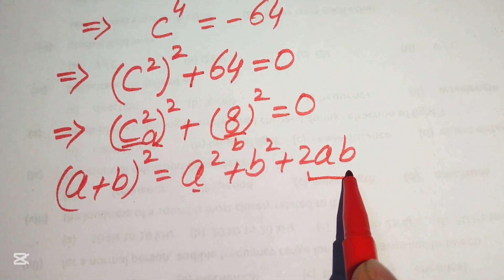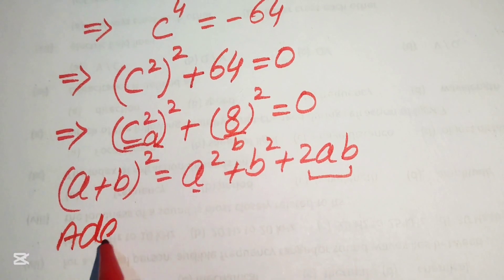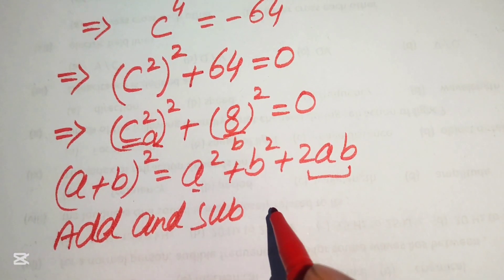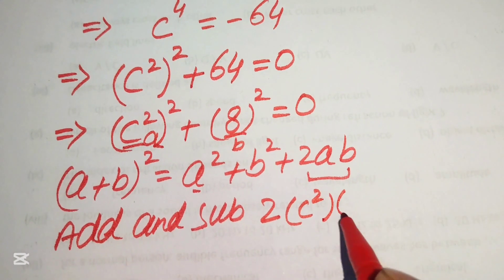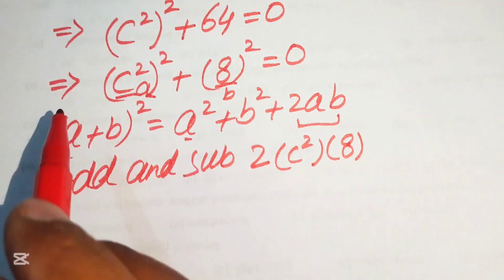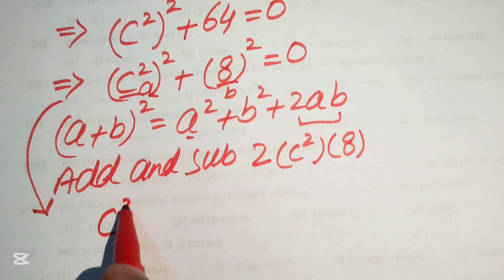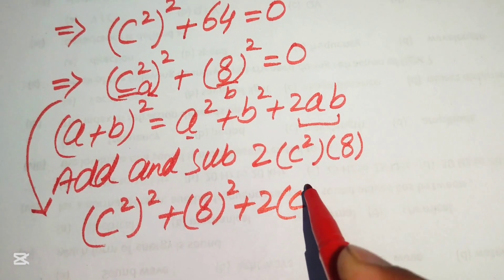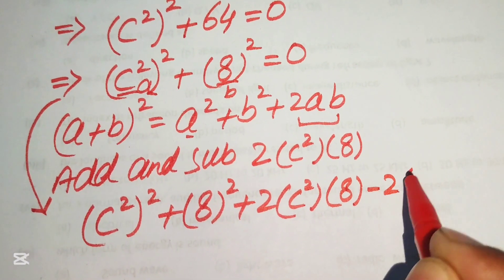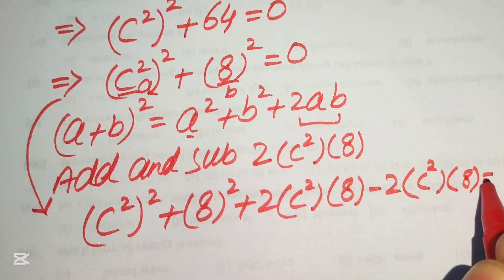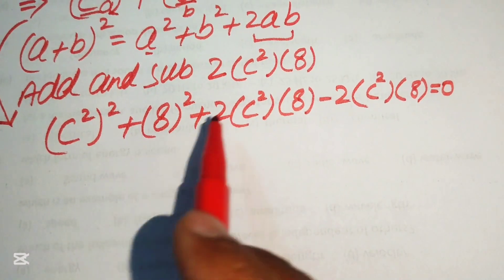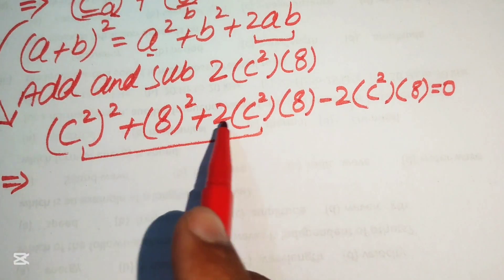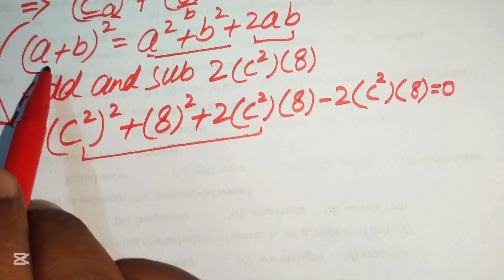To complete the square, we need the term 2 times a times b. So we add and subtract 2 times c squared times 8 to the equation. This gives us c squared whole squared plus 8 squared plus 2 times c squared times 8 minus 2 times c squared times 8 equals 0. We focus on the first three terms: a squared plus b squared plus 2ab.